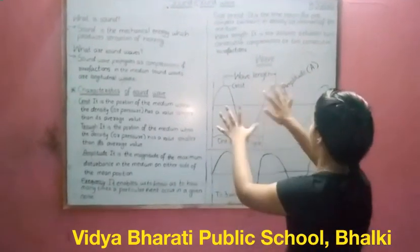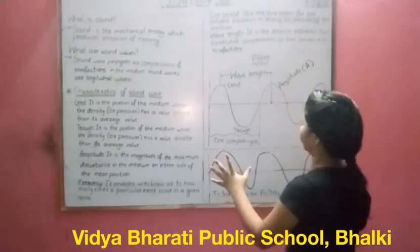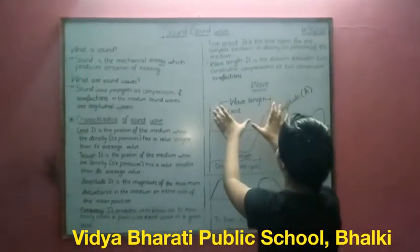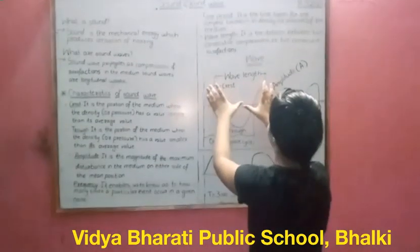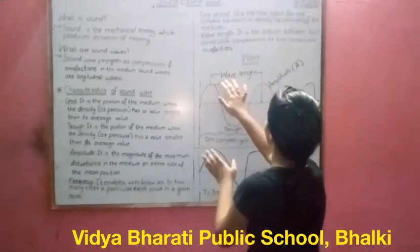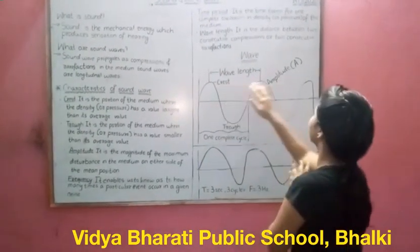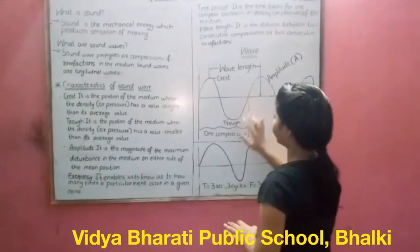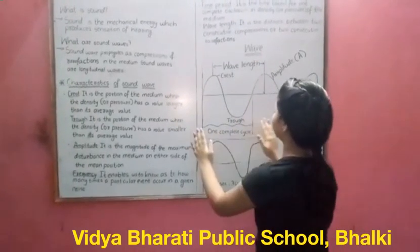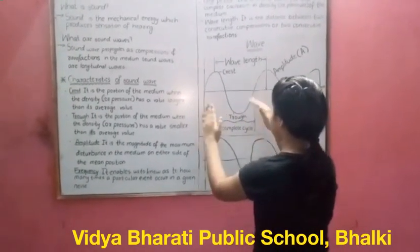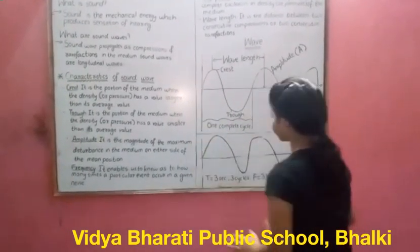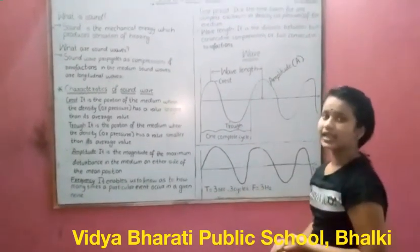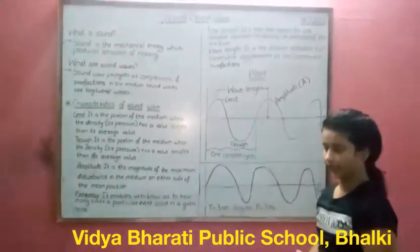This is the diagram of the wave. The distance between two consecutive compressions is called wavelength. This shows the first amplitude, crest, and one complete cycle.